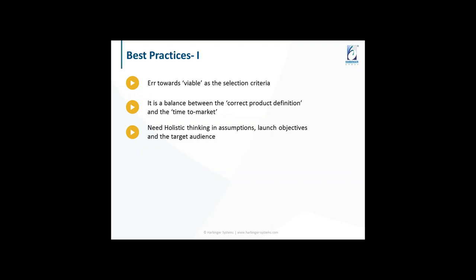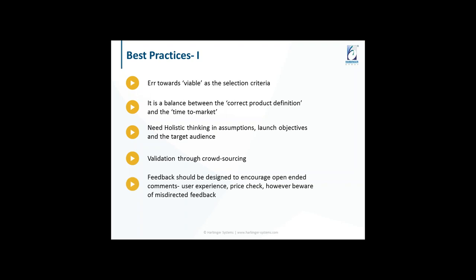It is usually a good idea to validate through crowdsourcing because that way you get good feedback rather than putting it out on the app store. Feedback should be designed to encourage descriptive comments — for example, a five-star feedback widget can prompt the user for a comment at five stars, and a one-star rating can also ask for a comment. Going further, feature creep should be strongly discouraged because it hampers the cohesiveness of the product. With multiple stakeholders, this happens — so you have to be firm and say no to any type of feature creep without a valid reason.